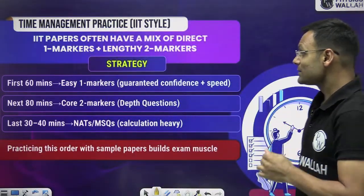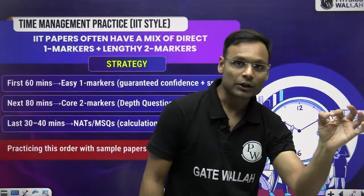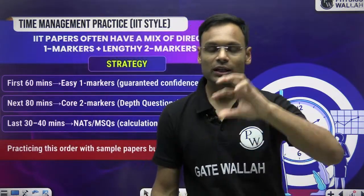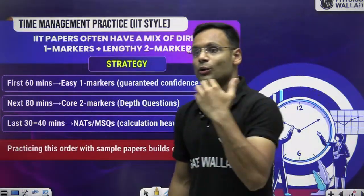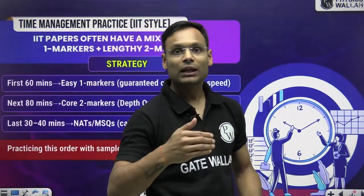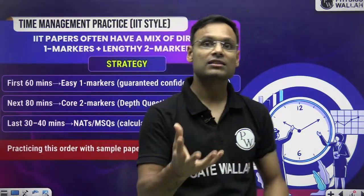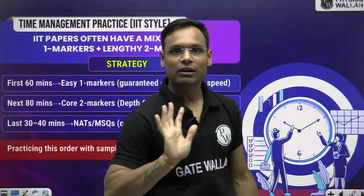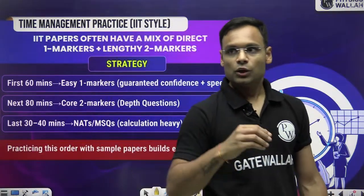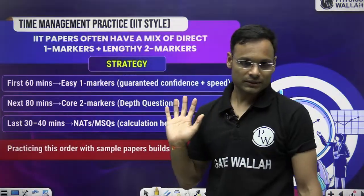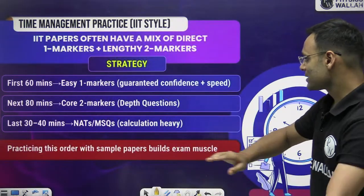When questions are mixed, solve each one-mark question within a minute or less. For two-mark questions, allow two to three minutes depending on the length and conceptual depth. By saving a minute here and there from one-mark questions, you accumulate time at the end to tackle two or three tough questions in the last 30–40 minutes. Practicing this order helps, but the order can be adjusted as per the actual examination pattern.